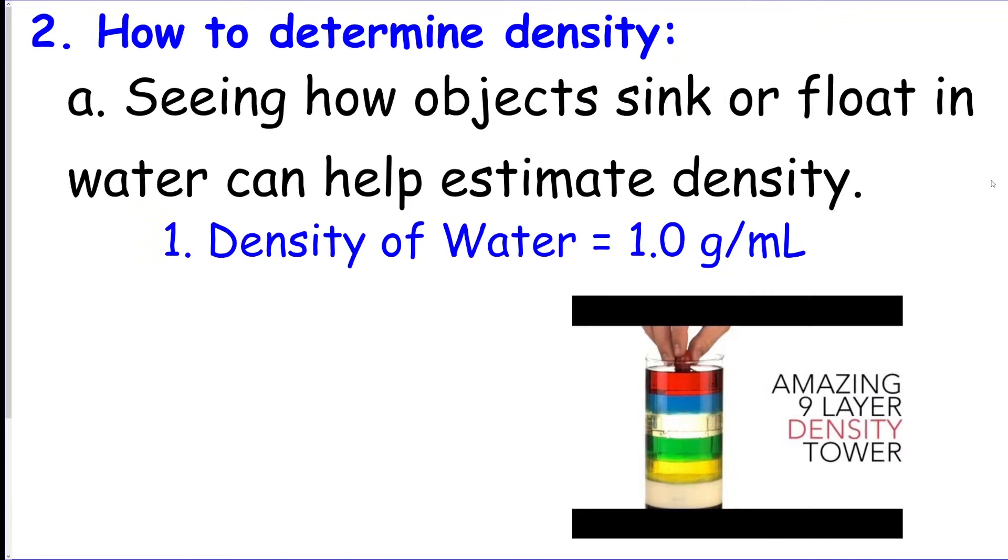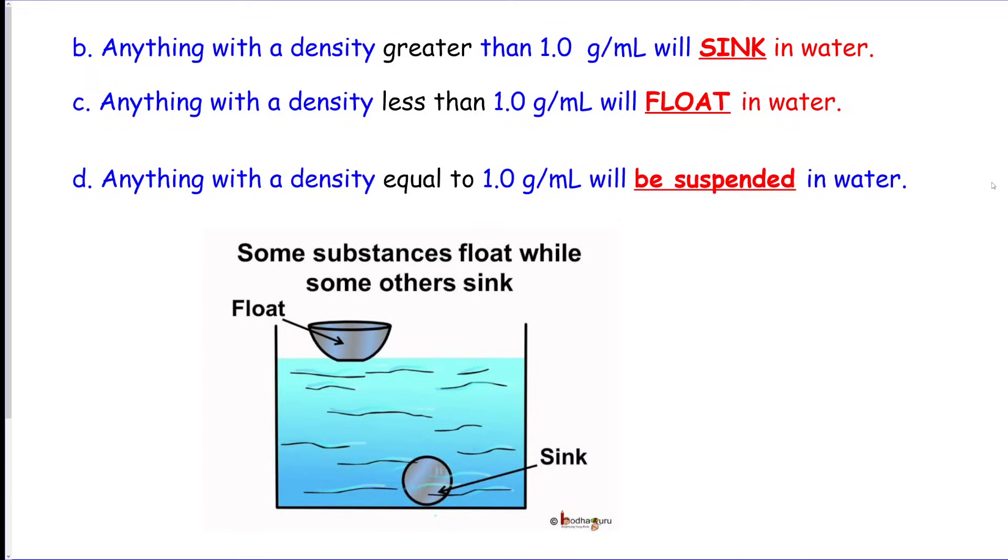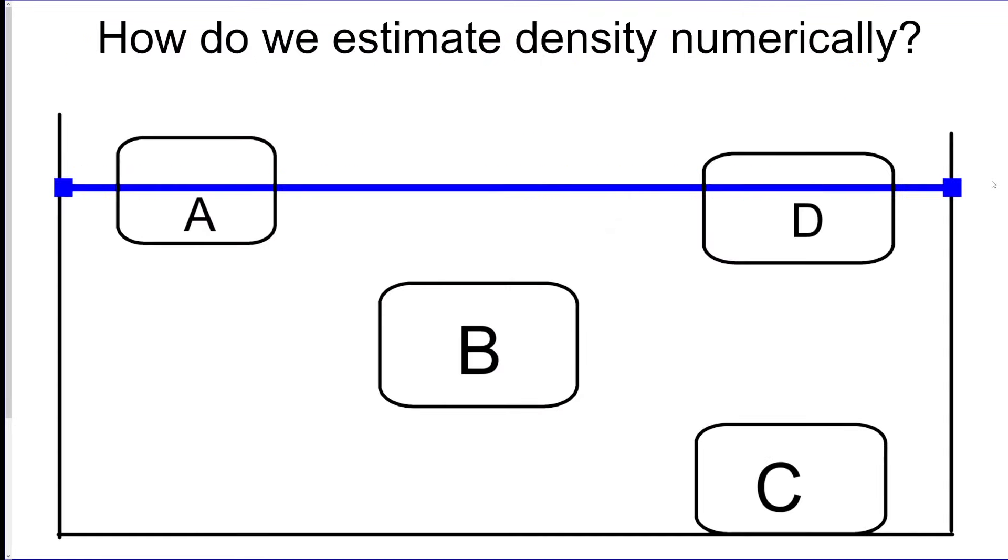If you have different objects in water, water has a density of 1.0 grams per milliliter. What you would be able to do is determine if it is less dense, more dense, or the same as 1.0. So in this case, this block on the top left A is halfway underwater, so we would say this is 0.5 grams per milliliter density.